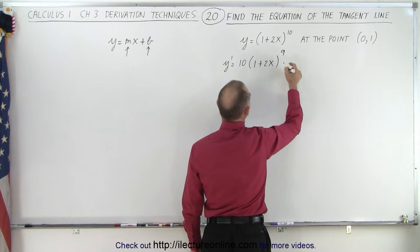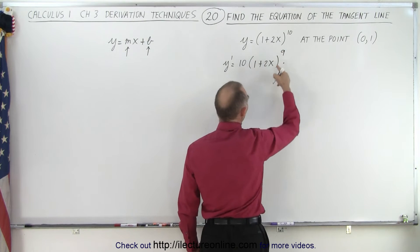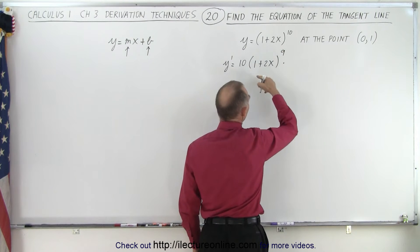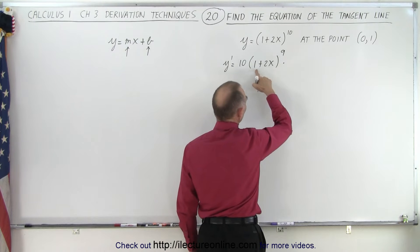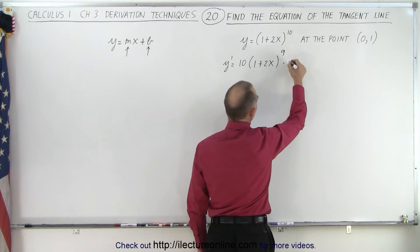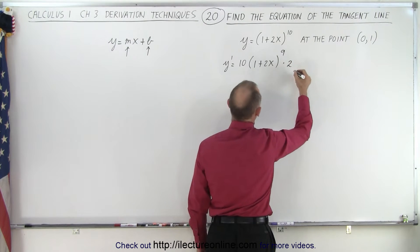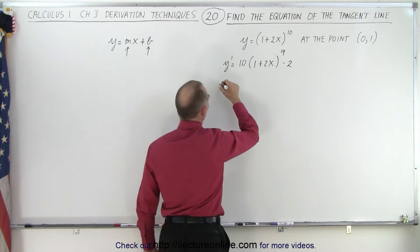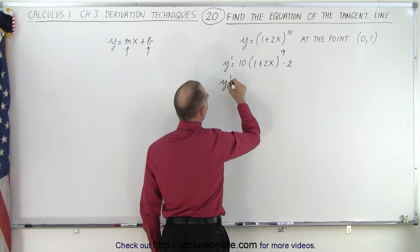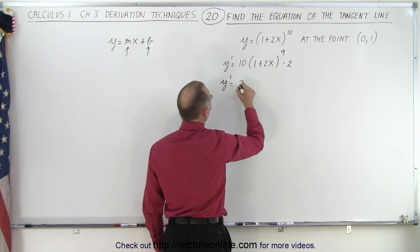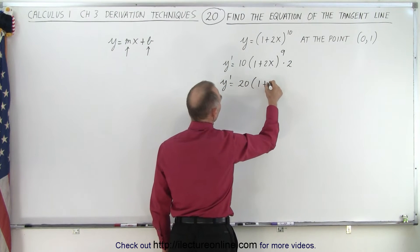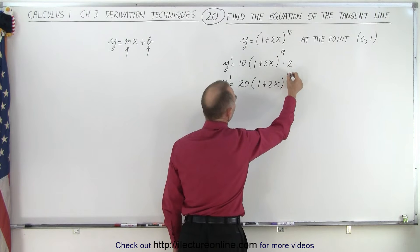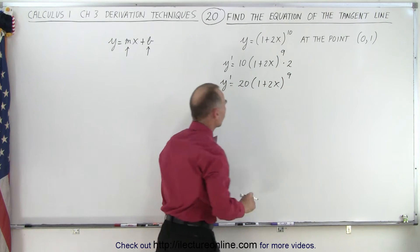times the derivative of what's inside: the derivative of 1 is 0 and the derivative of 2x is 2. So y prime becomes 20 times (1 plus 2x) to the 9th power.